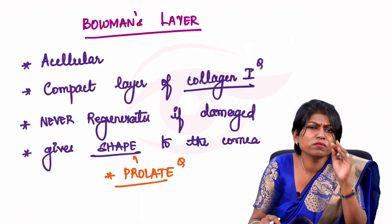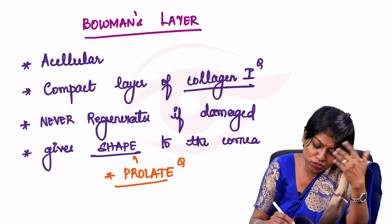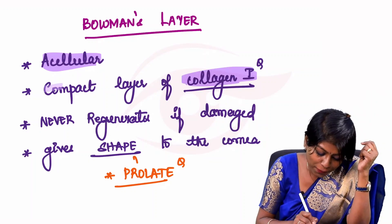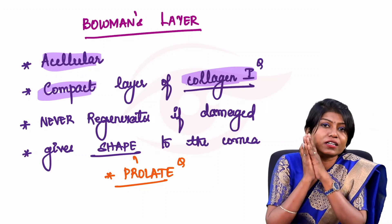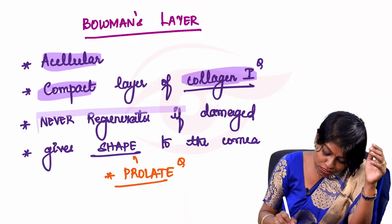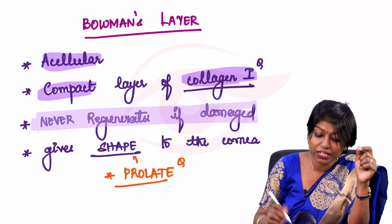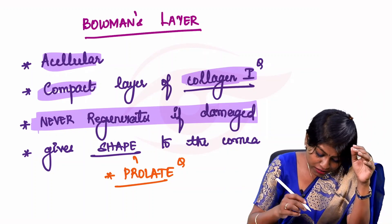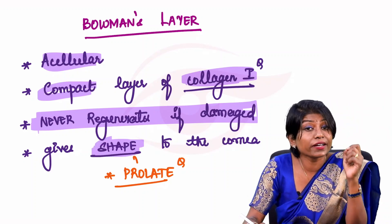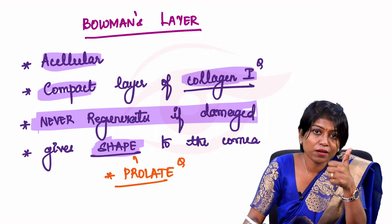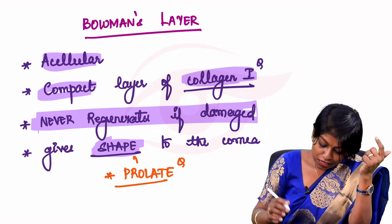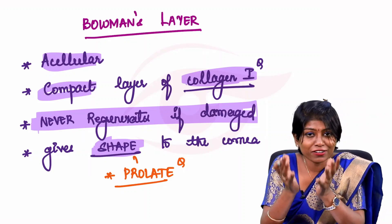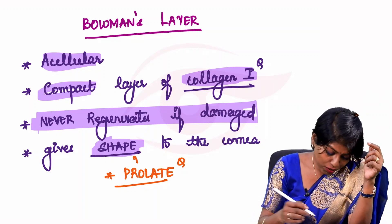Bowman's layer is the complete opposite of epithelium — it is acellular, containing only very compactly arranged collagen. It is the one and only layer that will never regenerate if damaged. Bowman's layer also gives shape to the cornea, and that shape is described as prolate.